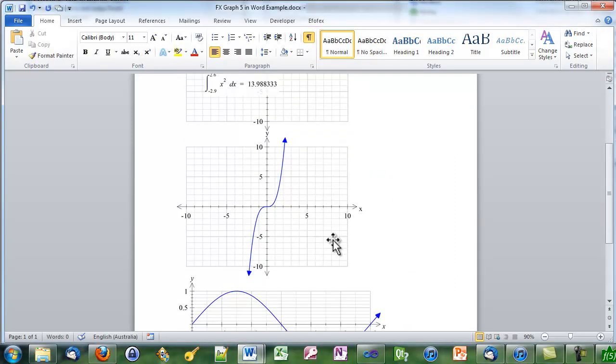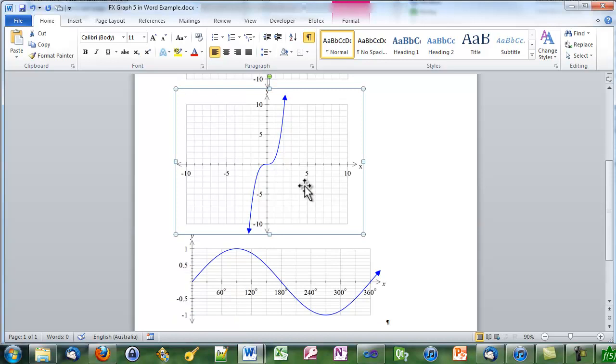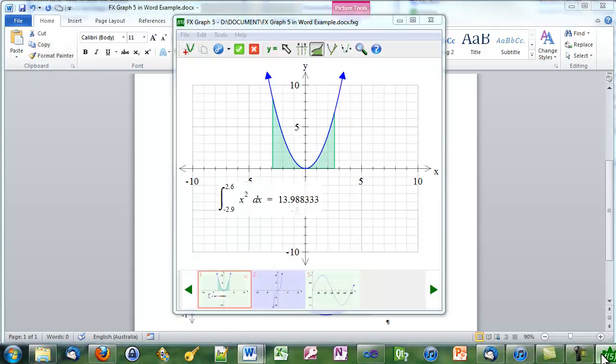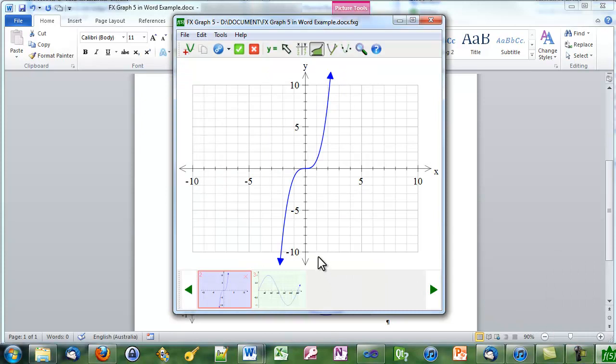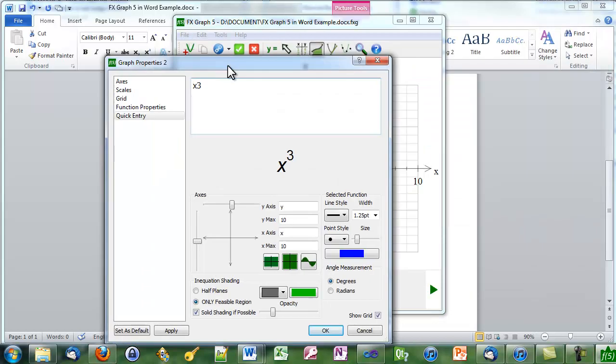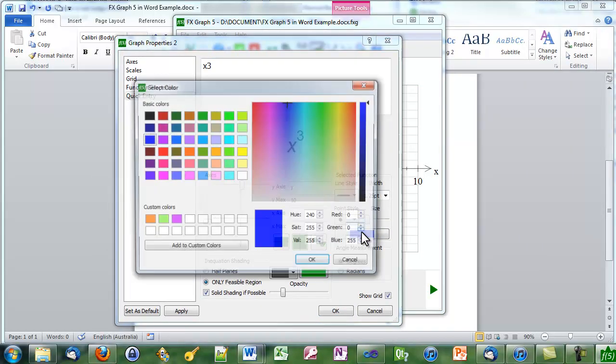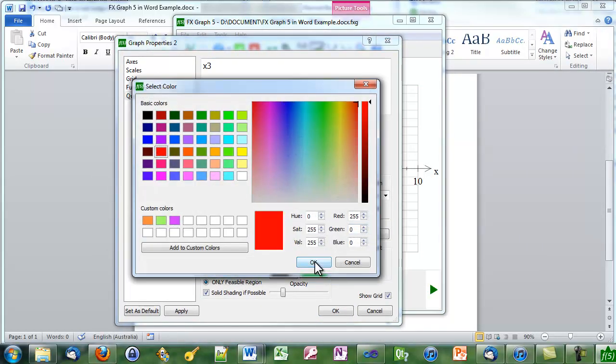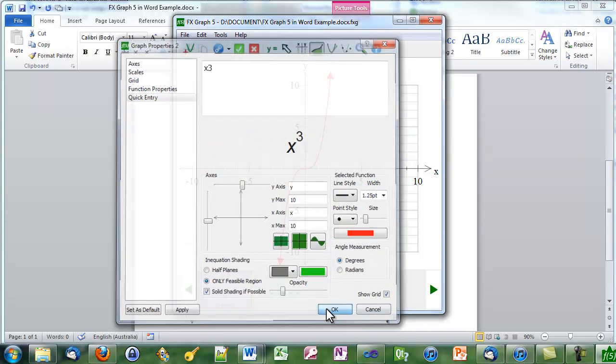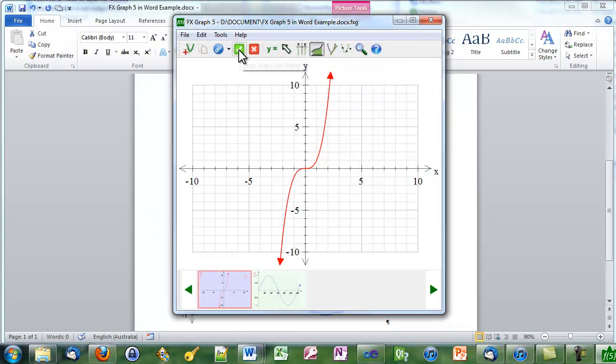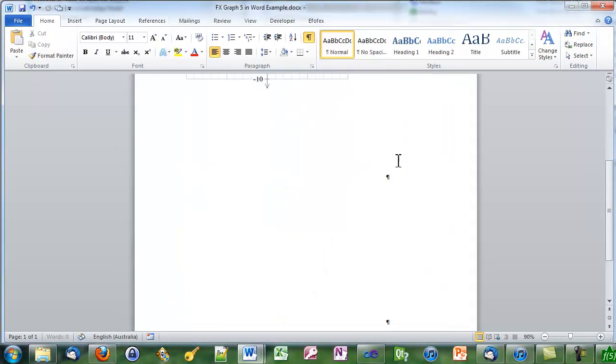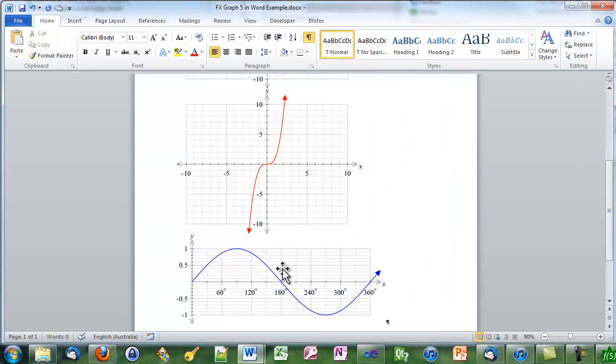So when I go to edit my cubic, I copy it to the clipboard, go to FX Graph, and the cubic's brought up automatically. We'll change this one. Let's make it red. All changed. Push the green tick. That's been changed in my document.